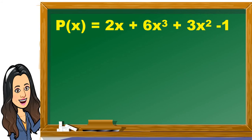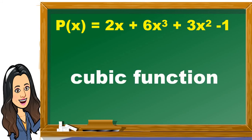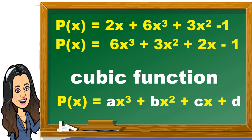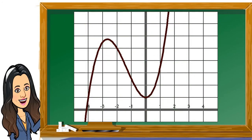p(x) = 2x + 6x³ + 3x² - 1. This is a cubic function. A cubic function is of the form p(x) = ax³ + bx² + cx + d, where a, b, c, d are numbers and a ≠ 0. If we rewrite this in standard form, it is p(x) = 6x³ + 3x² + 2x - 1. The value of a is 6, b is 3, c is 2, and d is negative 1. This is also called a third-degree polynomial, as the highest power of x is 3. Here is an example of the graph of a cubic function.